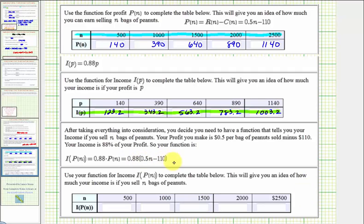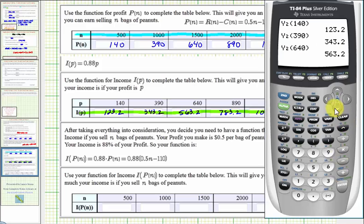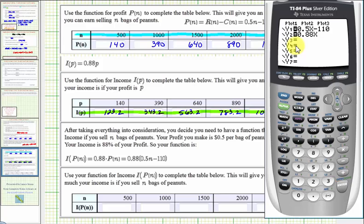After taking everything in consideration, you decide you need to have a function that tells you your income if you sell n bags of peanuts, rather than taking these two steps. Your profit you make is 50 cents per bag of peanuts sold minus 110 dollars. Your income is 88 percent of your profit. So your function of n that would give you the income is i of p of n, which is a composite function. Notice how the input into our function i is the profit function. So we'd have .88 times the profit function, or .88 times the quantity 0.5 n minus 110.